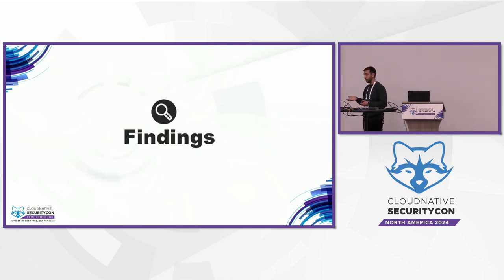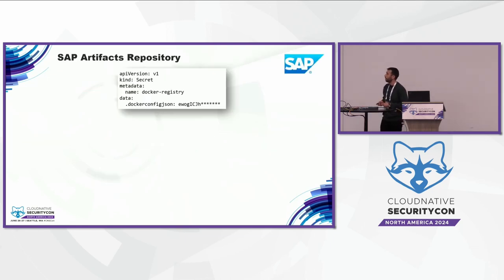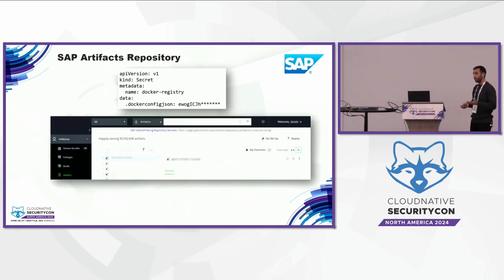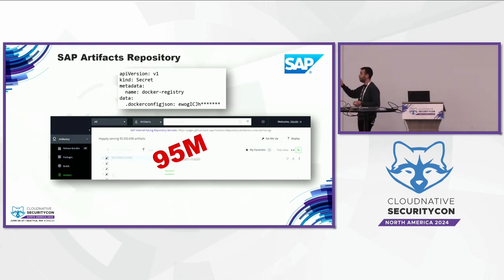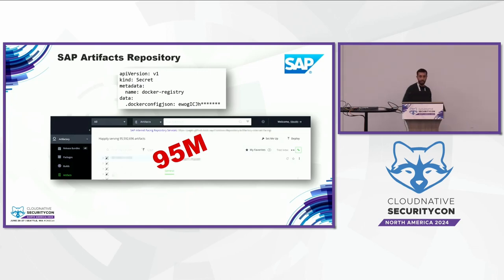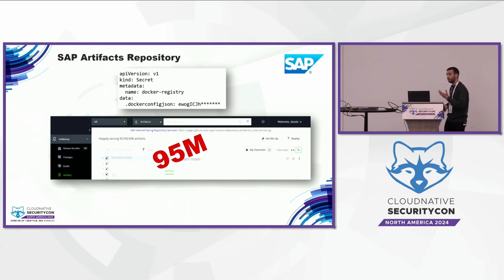Let's go over some examples. In our research we found a token related to SAP company — a token to their internal JFrog Artifactory. When we authenticated with this token, we found that this Artifactory contained more than 95 million different artifacts. Attackers could use this token to download and enumerate artifacts, and enumerate more secrets in that environment. We reported this finding to SAP, which rotated the token and investigated the issue.